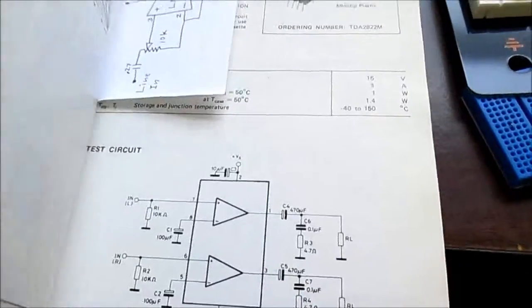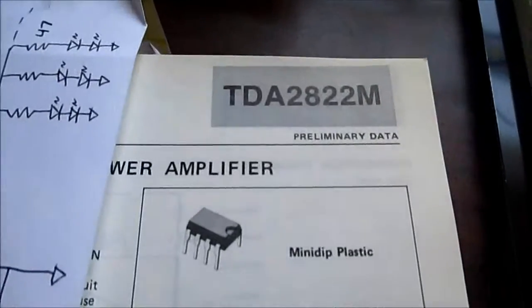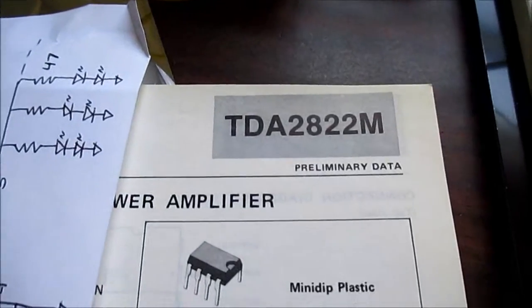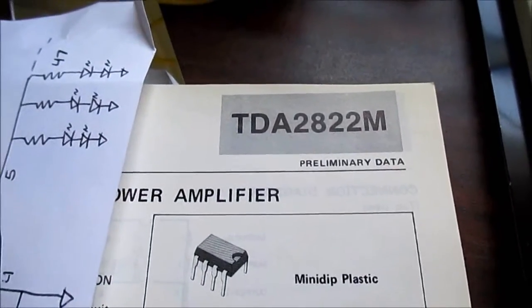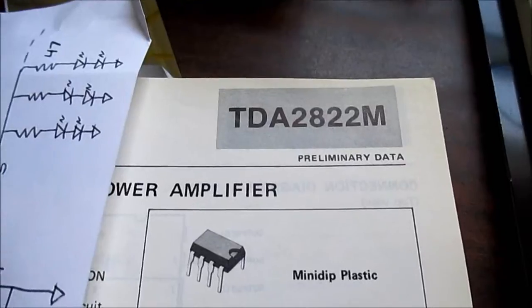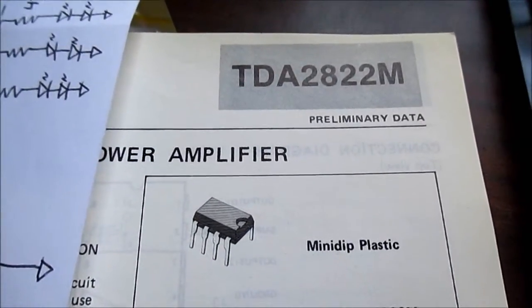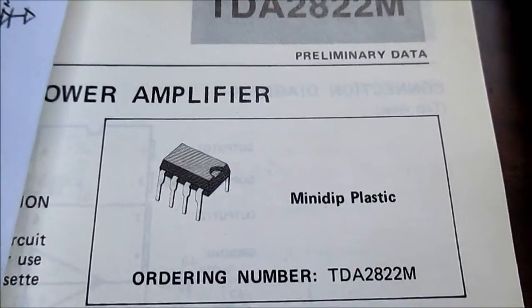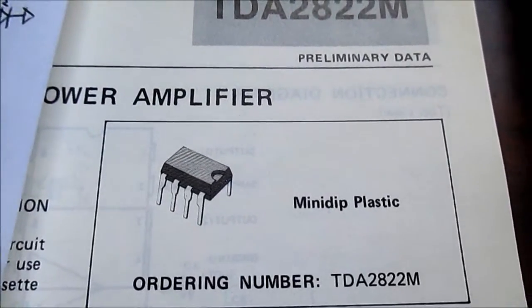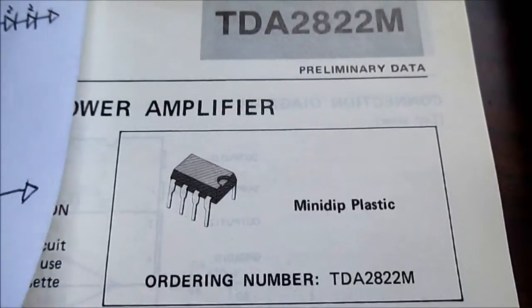We're going to look at a chip amp, TDA2822M. There is a 2822, but it's a 16-pin dual inline package. And this is an 8-pin dual inline package. So yeah, it's a stereo amplifier on a little chip like that. Same size as an LM386.